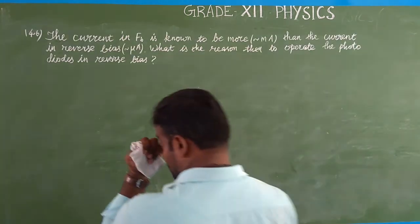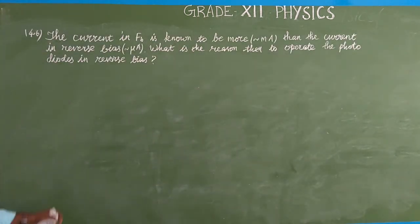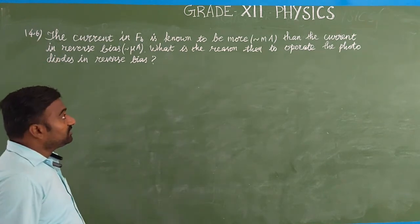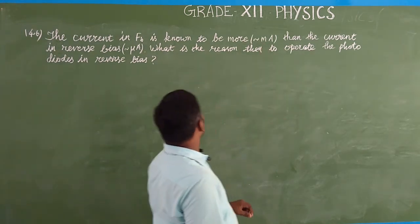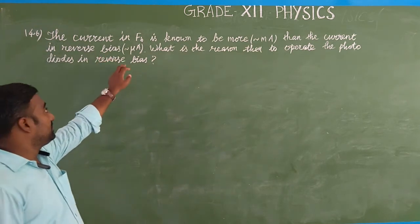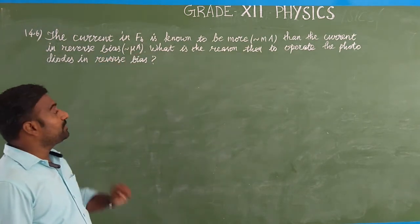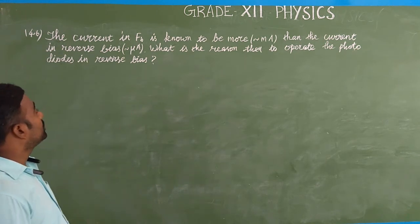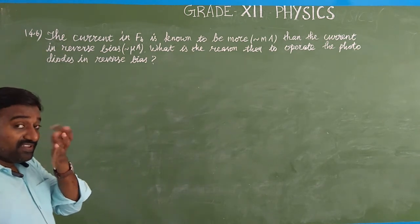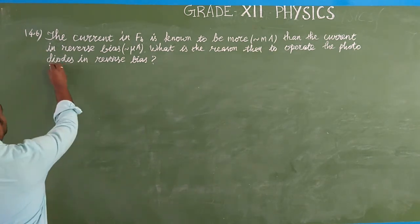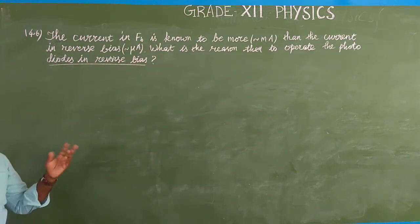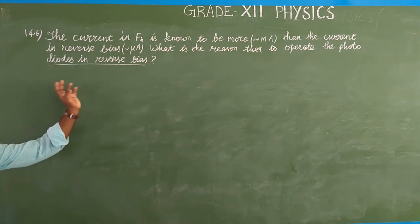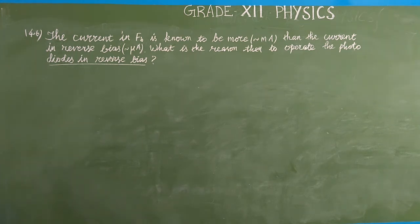Coming to the next question — question number 6. The current in forward bias is known to be more, mostly measured up to milliampere, while the reverse bias current is measured in microampere. Then what is the reason to operate the photodiode in reverse bias? The photodiode is a specially fabricated P-N junction diode that operates under reverse bias. What is the reason?